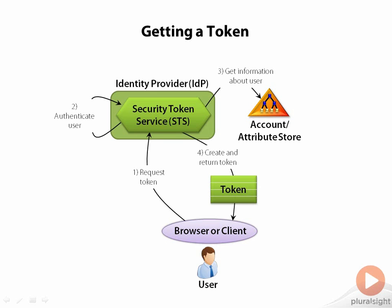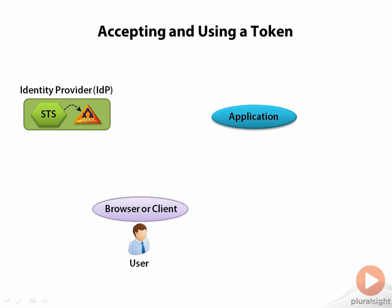The user now has a token that he or she can use to access applications. We're now ready for a more complete view of the process. It starts with the user authenticating and then getting a token. This is a summary of what was shown in the previous slide — all those steps collapsed into step one. Be aware, all of what was just shown is actually happening in step one.